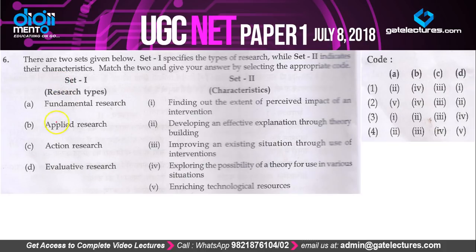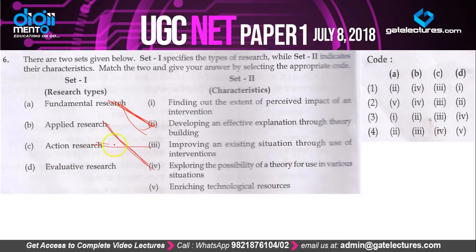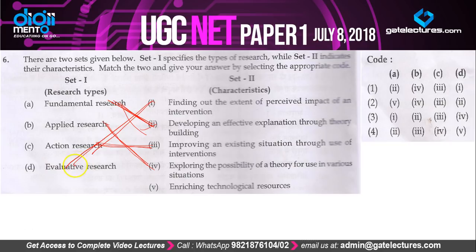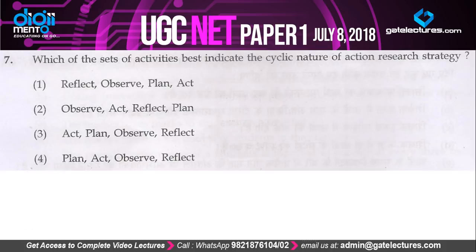Question 6: they have given four types of research — fundamental, applied, action, and evaluative — and you need to match them to what happens in each. Fundamental research is developing an effective explanation through theory building. Applied research is exploring the possibility of a theory for use in various situations. Action research is improving an existing situation through use of interventions. Evaluative research is finding out the extent of perceived impact of an intervention. This gives the order 2-4-3-1, which is option 1.